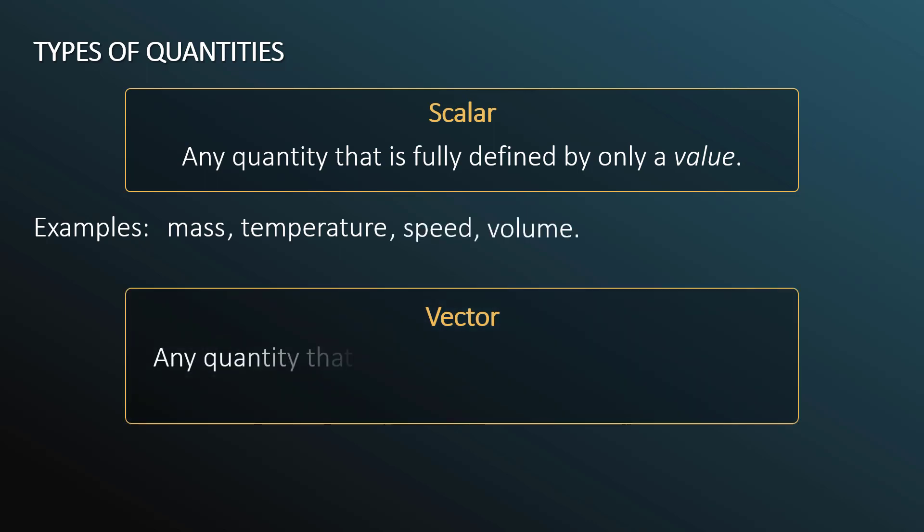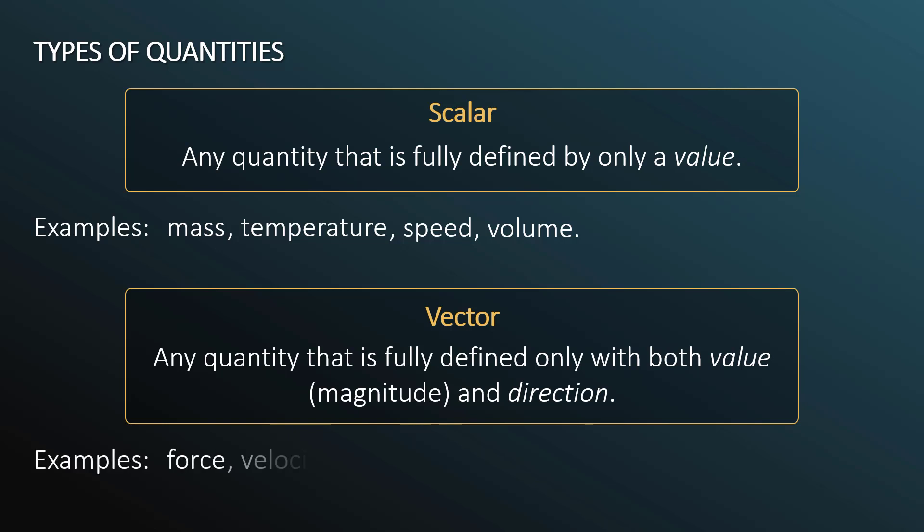Conversely, a vector is any quantity that is fully defined only with both value, or magnitude, and direction. Examples are force, velocity, and acceleration.